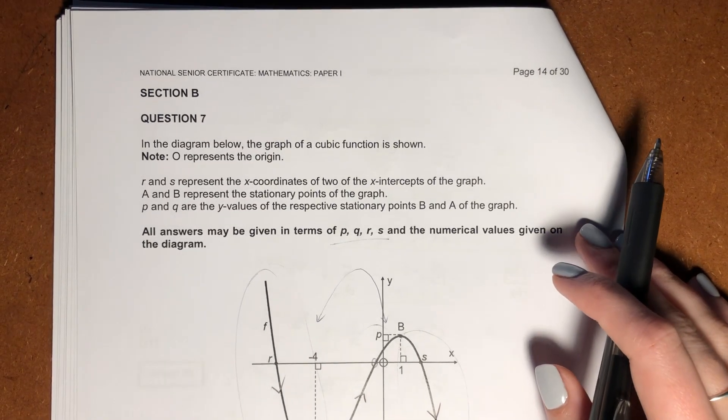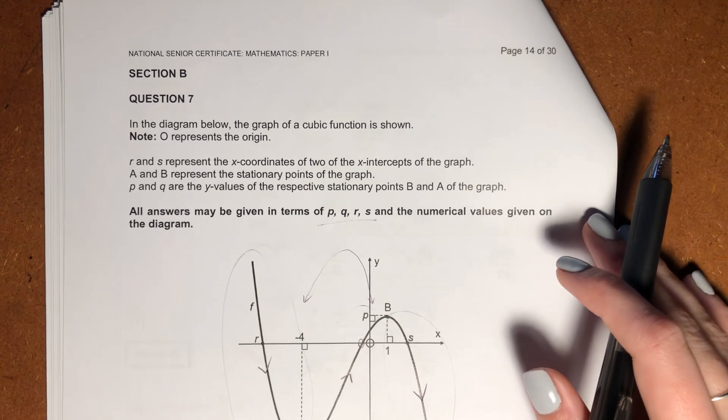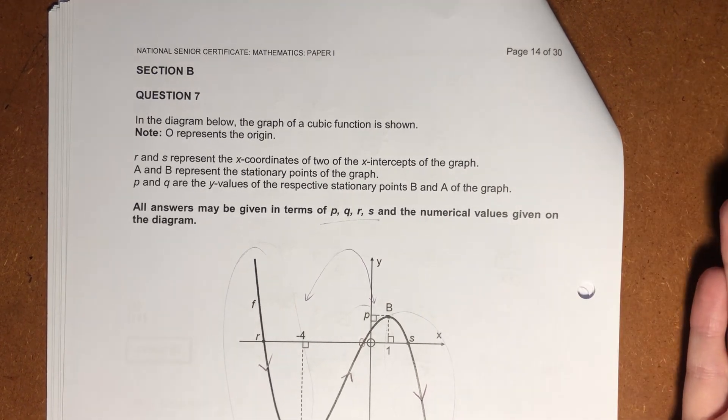Okay, let's start with section B, which starts with question 7. This question is on a cubic, which is fairly standard for a paper 1 paper.